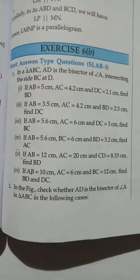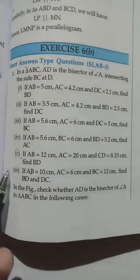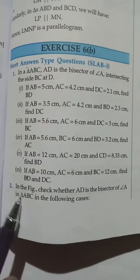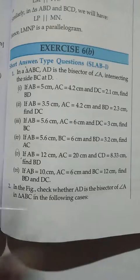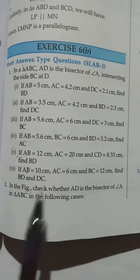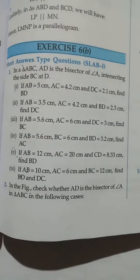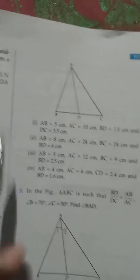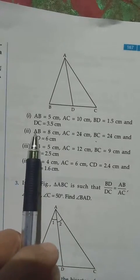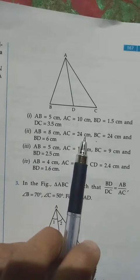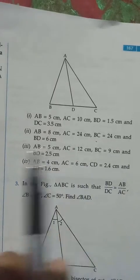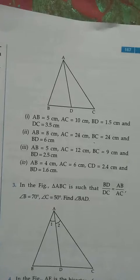Let's continue with exercise 6b question 2. In question 2 we have triangle ABC, then we have AD, a line from angle A. So we need to check whether this AD is the bisector of angle A or not. Question 2 gives us AB = 8cm, AC = 24cm, BC = 24cm, and BD = 6cm.